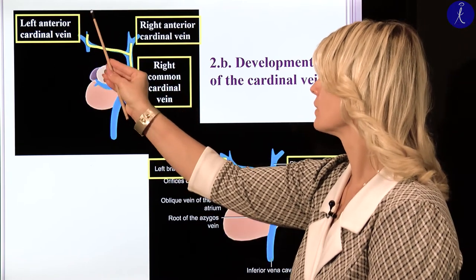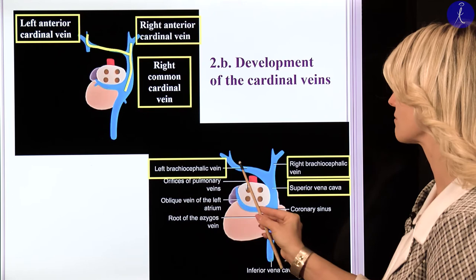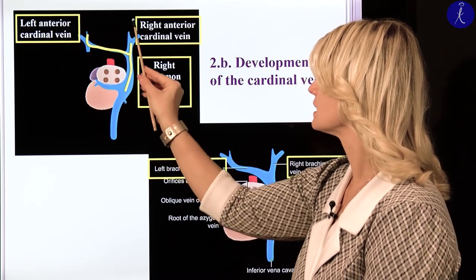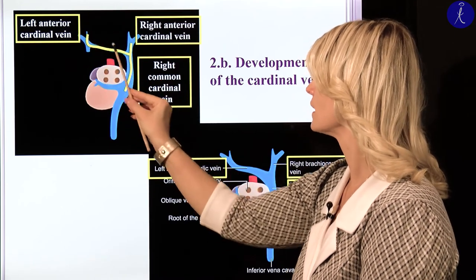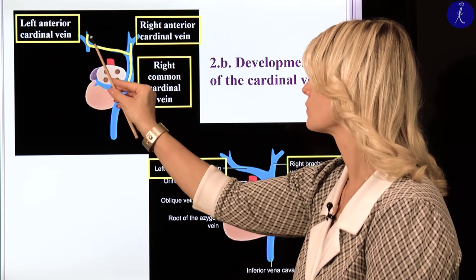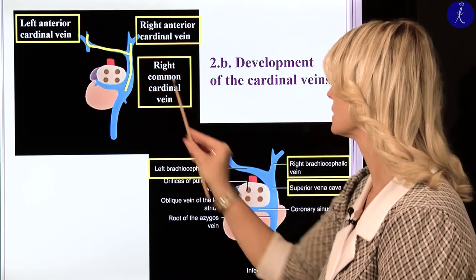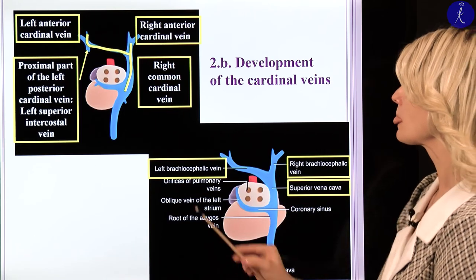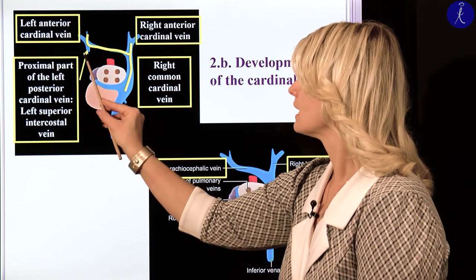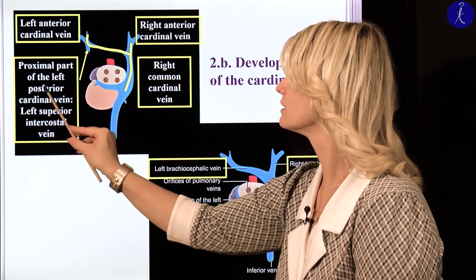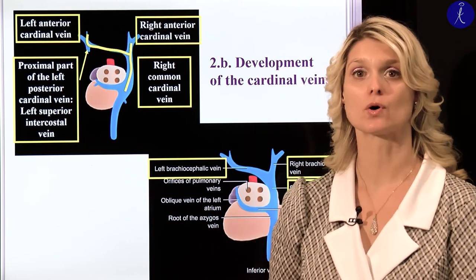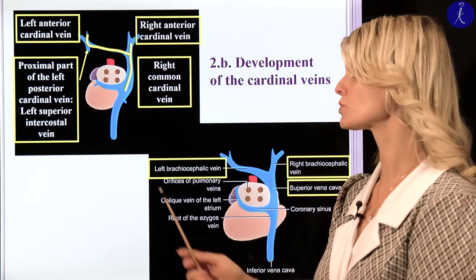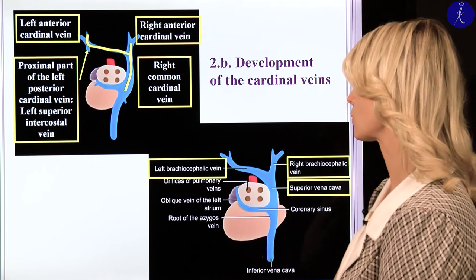From the right anterior cardinal vein and the common cardinal vein will be the right brachiocephalic vein and the superior vena cava. From the left cardinal vein will be the left brachiocephalic vein. The venous circulation drains from the left side to the right side, and that's why the left brachiocephalic vein is longer compared to the right one. From the proximal part of the left posterior cardinal vein will be the left superior intercostal vein, which will collect venous blood from the upper two intercostal segments.